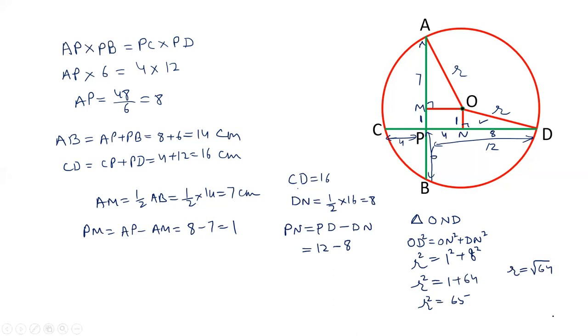So, radius is under root 65. It is just a fraction more than 8 point something. And diameter will be 16 point something, which is possible as the length of CD is 16. So, diameter will be just a bit more than CD. Both the cords should be less than diameter, which is true in this case. So, I hope friends you like this video. Please like our videos and subscribe to our channel.